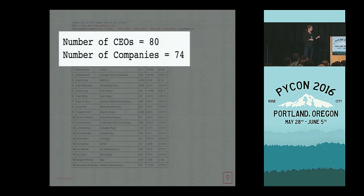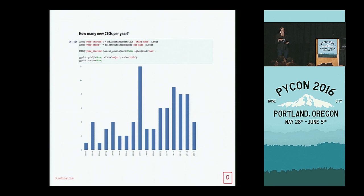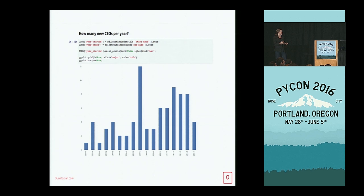From the period of 2002 to the end of 2014, there were 80 female CEOs in the Fortune 1000, across 74 companies because some companies have multiple female CEOs. I pulled this data into our research platform, which is a hosted IPython platform. This chart shows all of the number of new CEOs every single year. I would argue this trend is going in the right direction — up and to the right. You might also notice this goes back to before 2002.